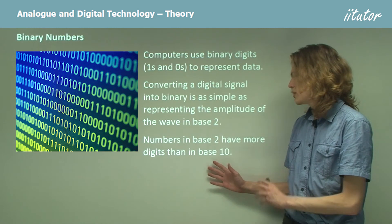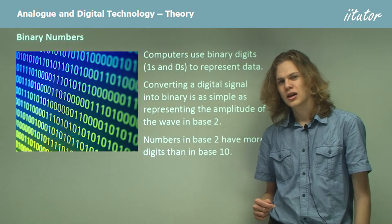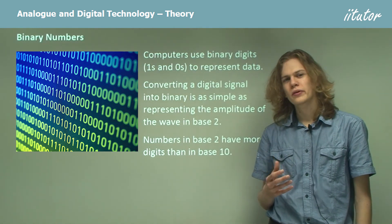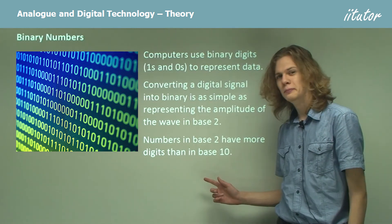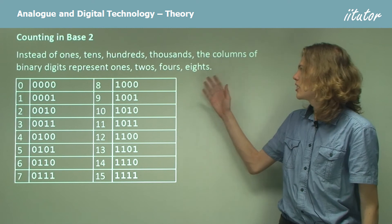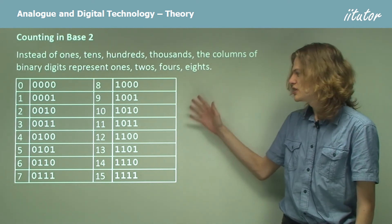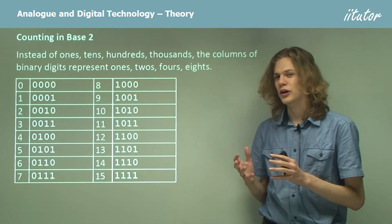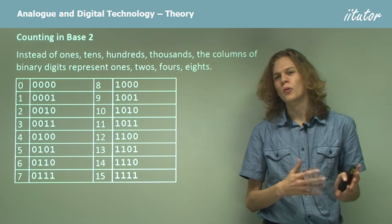Numbers in base 2 have more digits than in base 10. To represent 8, for example, in base 2 that's four digits long, whereas in base 10 it's still only one digit. So instead of tens, hundreds, thousands, we have ones, twos, fours, eights. We can see a table showing conversions between base 10 numbers and base 2, or binary, numbers.